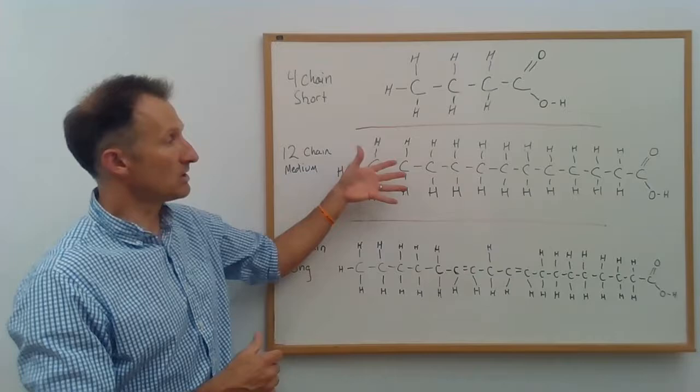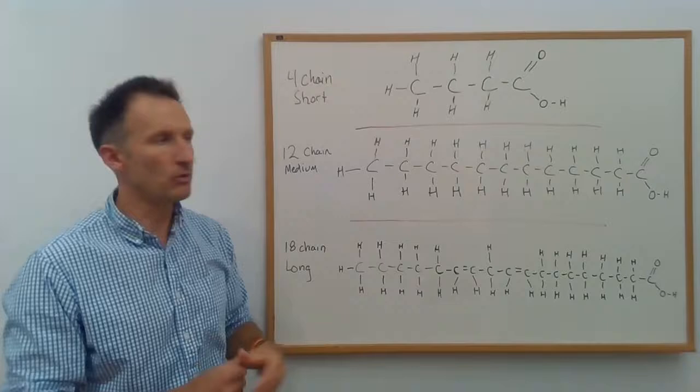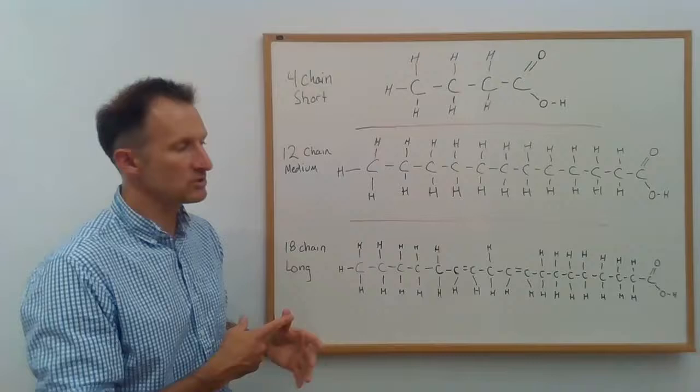but are considered a quick source of instant energy because they're so easy to digest. 45% of coconut oil, in fact, is medium chain lauric acid like this fatty acid.